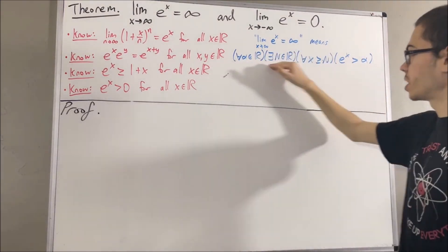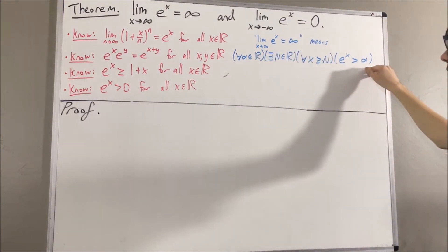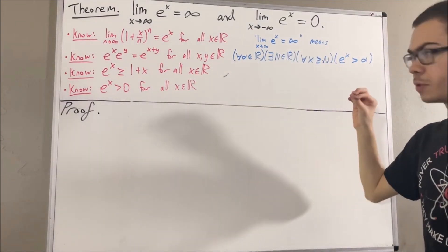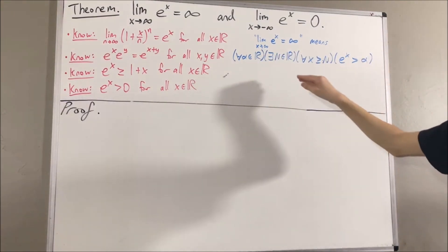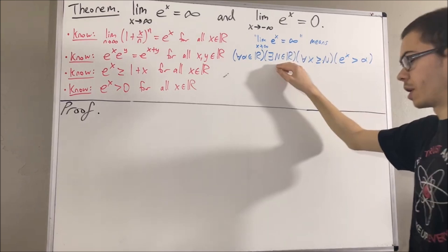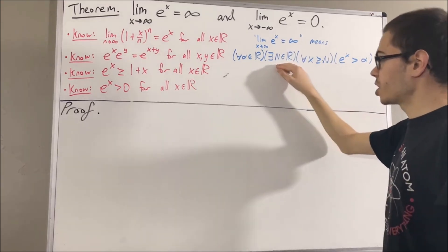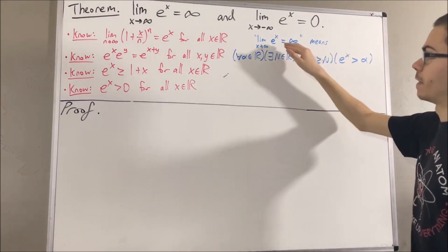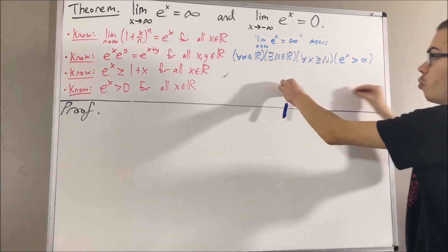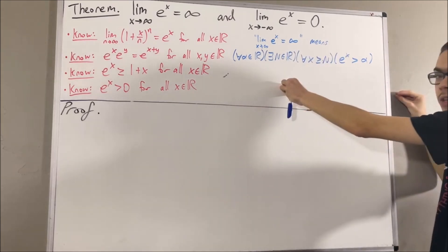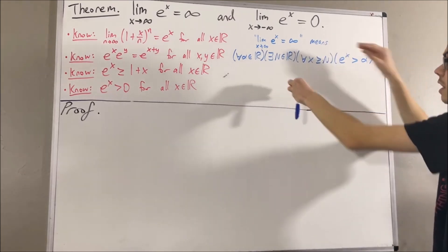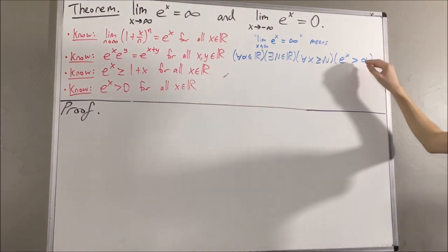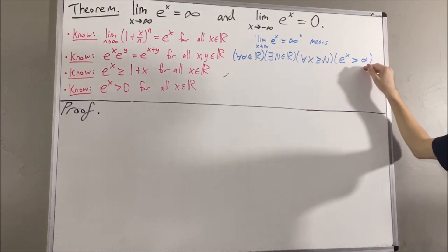To put this another way, if you give me any real number alpha, I guarantee you I can find a real number capital N, such that if you look at the graph of e to the x everywhere to the right of capital N, e to the x will always sit above the line y equals alpha. And you can do this for any real number alpha.